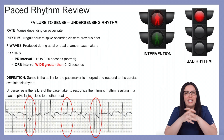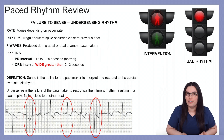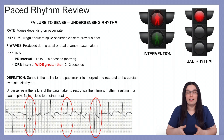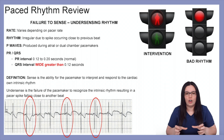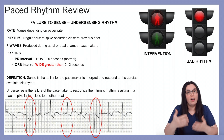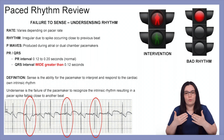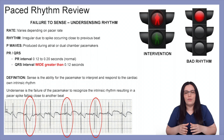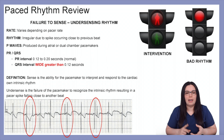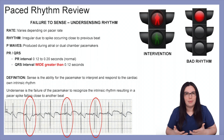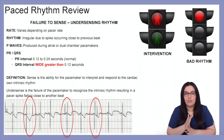We're going to begin by looking at failure to sense, specifically undersensing. Sense is the ability for the pacemaker to interpret and respond to the cardiac's own intrinsic rhythm. Undersensing is the failure of the pacemaker to recognize that intrinsic rhythm, resulting in a pacer spike falling close to another beat. The rate, rhythm, P waves, PR intervals, and QRS pretty much follow the same function as most pacemaker rhythms, except that we have a beat occurring very close to another beat.